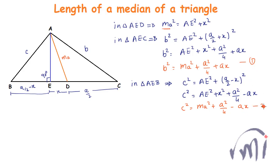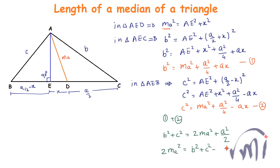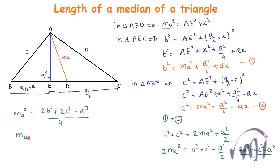Calling the b² equation as equation 1 and the c² equation as equation 2, and adding them: b² plus c² equals 2·Ma² plus a²/2. So 2·Ma² equals b² plus c² minus a²/2, which gives 2·Ma² equals (2b² plus 2c² minus a²)/2. Therefore Ma equals half of the square root of 2b² plus 2c² minus a². This is the formula for the length of the median from vertex A.